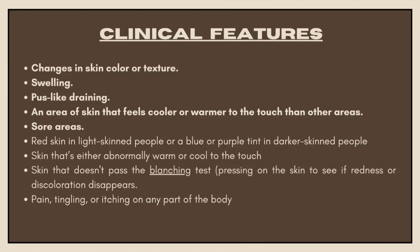The clinical features of a pressure sore include skin color changes, swelling, pus, pain, the area feeling cool or sore, redness or discoloration of the skin, and blue-purple discoloration in darker skin. Skin may be either abnormally warm or cool to touch. Skin that does not pass the blanching test — pressing on the skin to see if redness or discoloration appears — is also a sign.